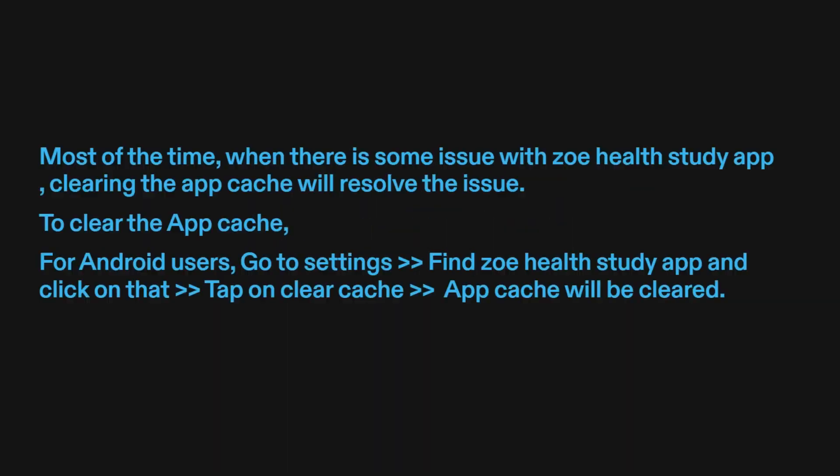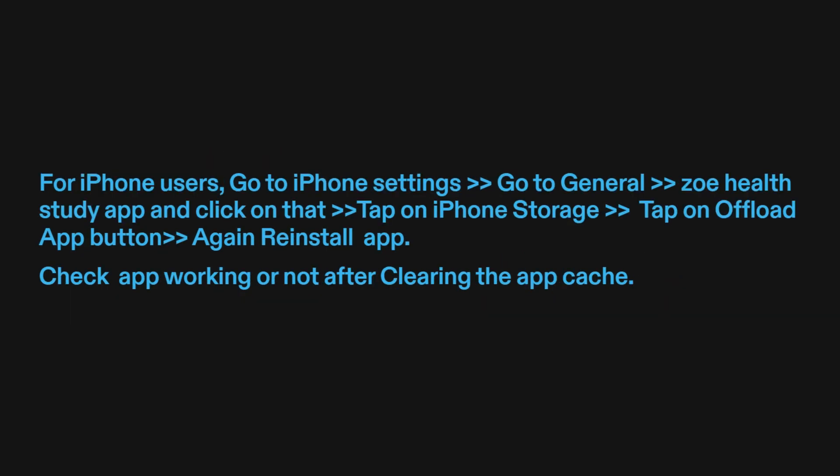Fix four: clear app cache. Most of the time, when there is some issue with the Zoe Health Study app, clearing the app cache will resolve the issue. For Android users, go to Settings, find the Zoe Health Study app and click on it, then tap on Clear Cache. For iPhone users, go to iPhone Settings, go to General, find the Zoe Health Study app, tap on iPhone Storage, then tap the Offload App button and reinstall the app. Check if the app is working after clearing the app cache.